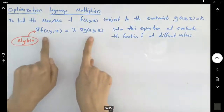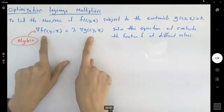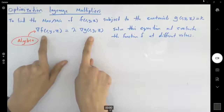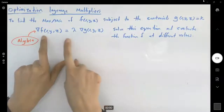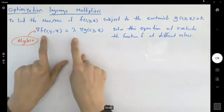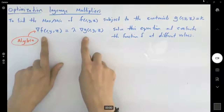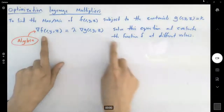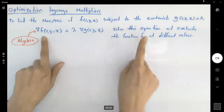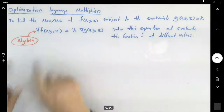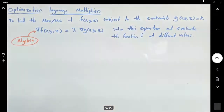Taking the gradient of f and setting it equal to lambda times the gradient of g — this is the calculus part. The rest is algebra. Let's take a look at one example.